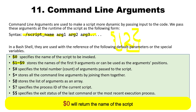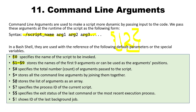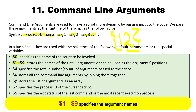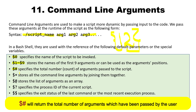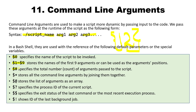Then $0 specifies the name of the script to be invoked, which means if we are using $0 in our script, it's going to print the name of the script. Then $1 to $9 specifies the names of the first 9 arguments that can be passed along with the script while executing it. Then $# specifies the total number of arguments which are passed to the script. We need not use all the arguments that have been passed, but we can directly count the total number.